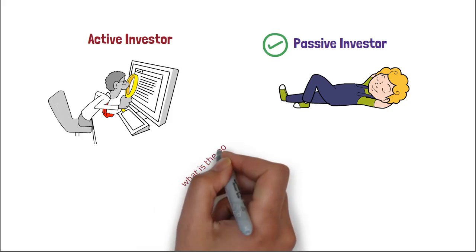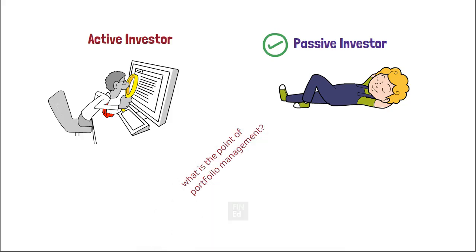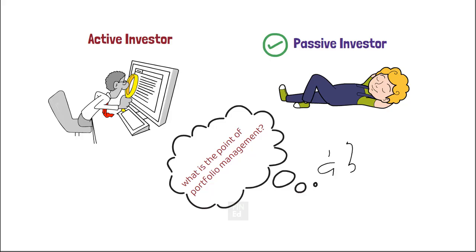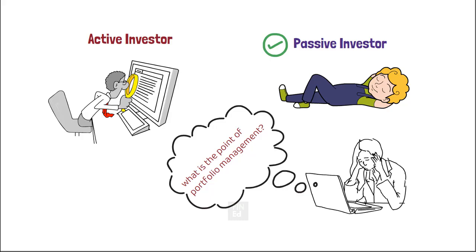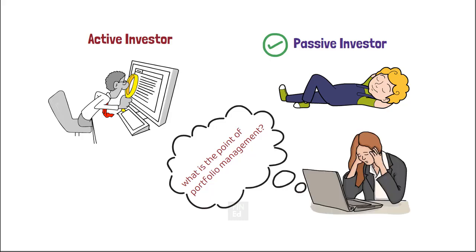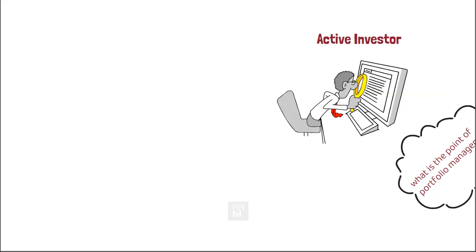Another question is: if the efficient market hypothesis is true, what is the point of doing portfolio management? There is still a role for portfolio management even in an efficient market. Investors' optimal positions will vary according to factors such as age, tax bracket, risk aversion, and employment. The role of the portfolio manager in an efficient market is to tailor the portfolio to these needs rather than to beat the market. But we are still in doubt as to whether stock markets are really efficient — there seem to be two camps, one believing in EMH and the other not.